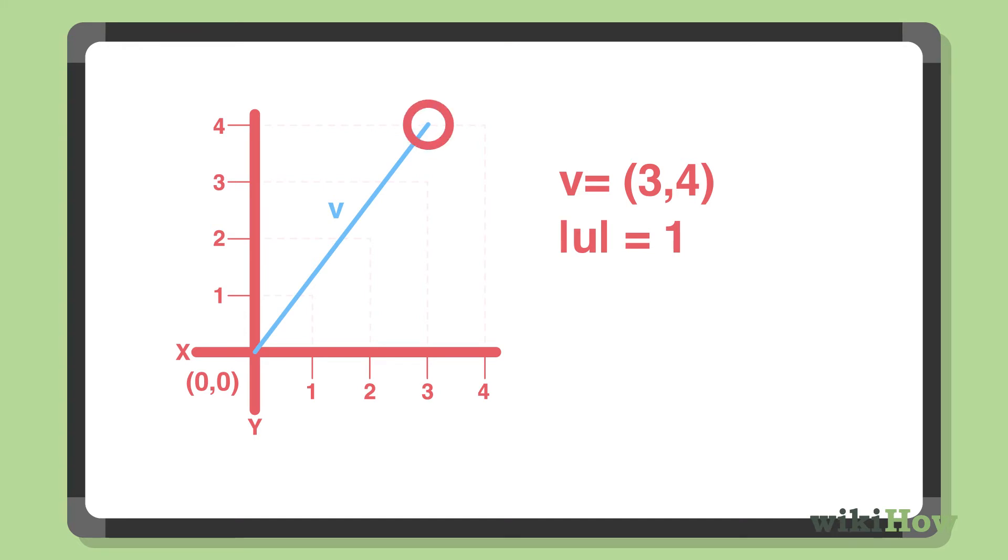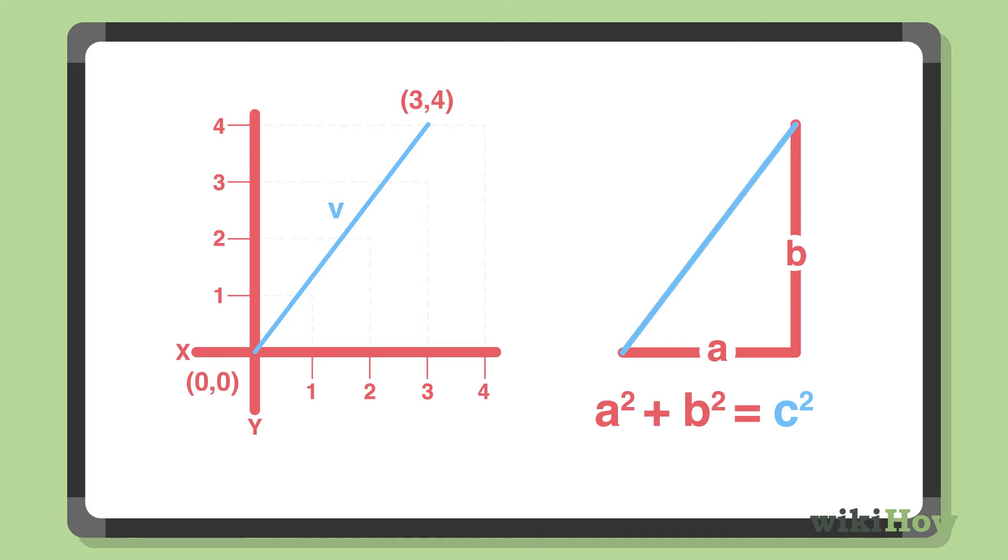Now you'll need to calculate the endpoint, or terminal point, of your unit vector. First, calculate the length of the original vector using the Pythagorean theorem: a² + b² = c². Think of the vector as a right triangle, where sides a and b equal the values of the end coordinates in the x and y axes, and the hypotenuse is the length of the vector.